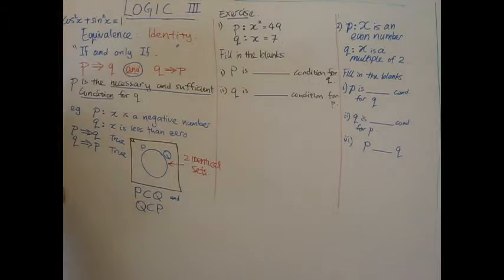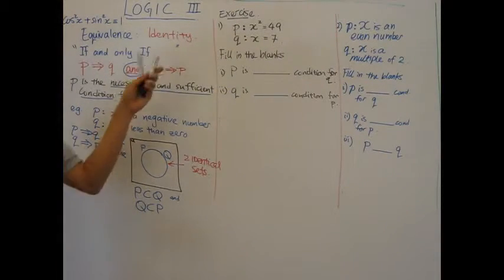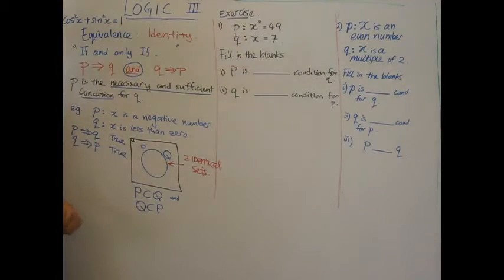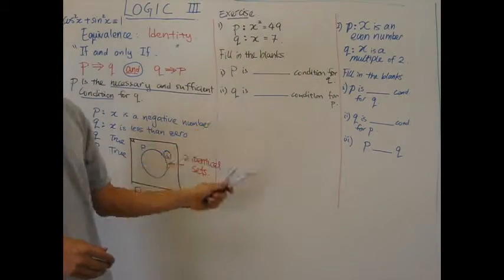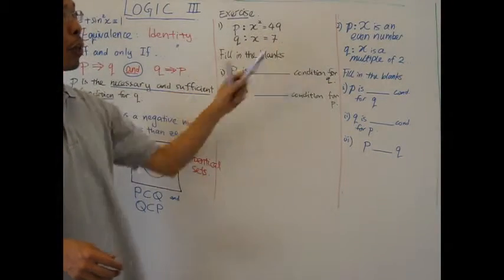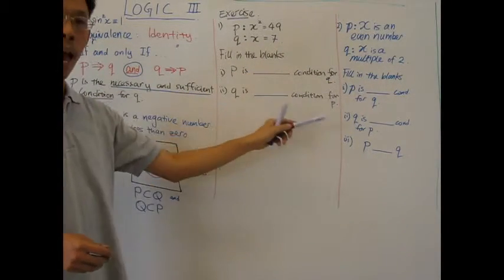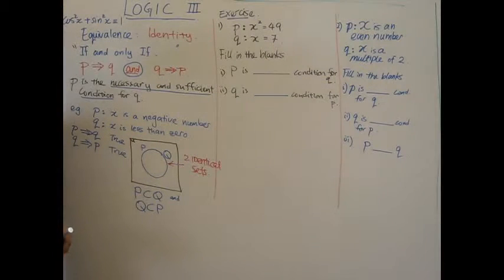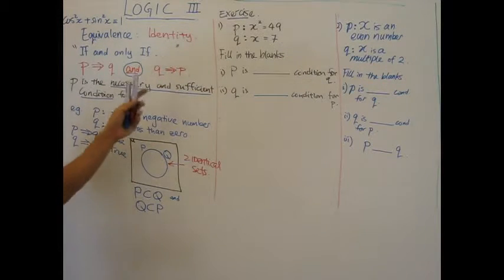Here's some exercise. Question number one says P is a statement that x squared equals 49, Q is x equals 7. Fill in the blanks. Question number two: P is x is an even number, Q is x is a multiple of 2. You may want to pause the video, attempt this question, and when you're ready resume the video.